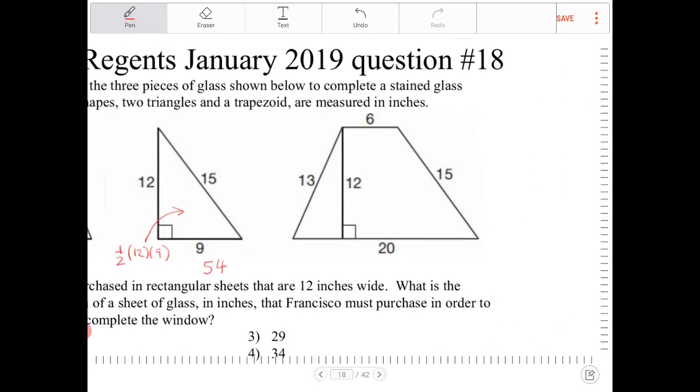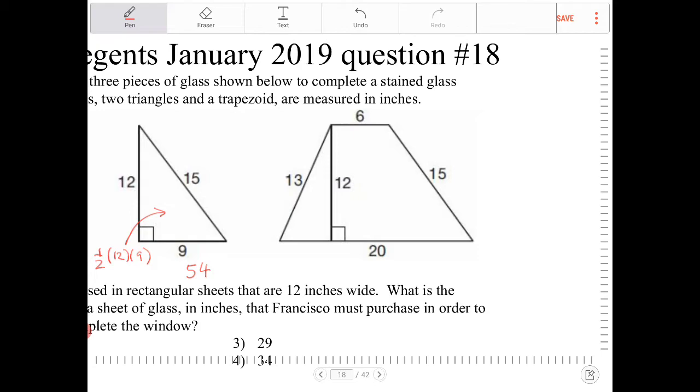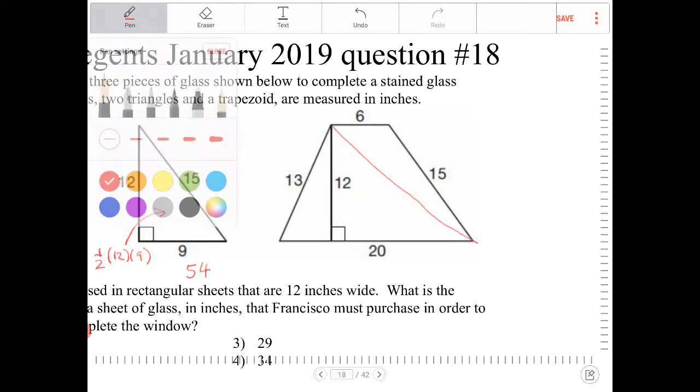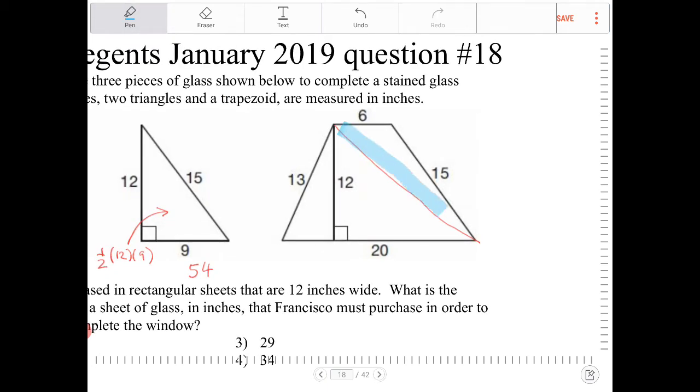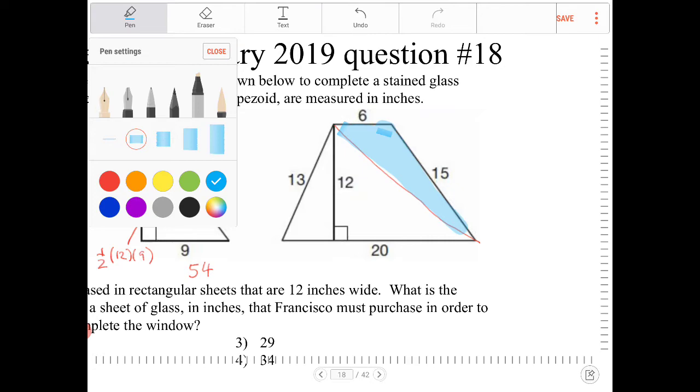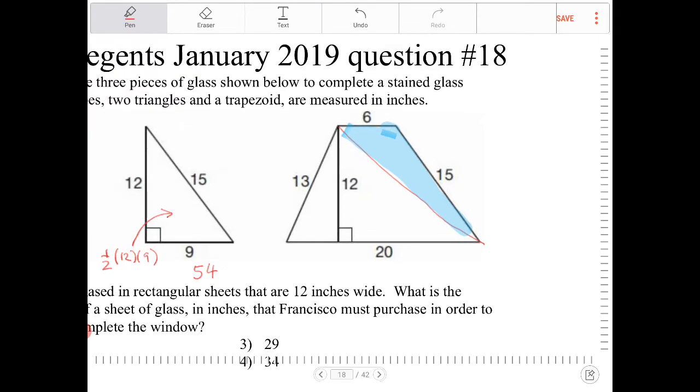And then this guy right here, this is a trapezoid. And the way to approach this is, I'm going to draw a diagonal, like so. And what you can see here is, based on that construction, that diagonal there, you can see that I've partitioned the trapezoid into an obtuse triangle with that shape, and an acute triangle with this shape. So I'm going to find the area of each one of these triangles separately.